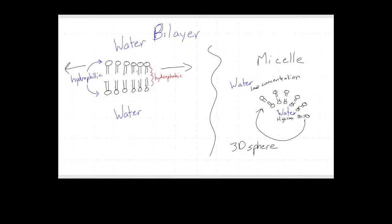If these phospholipids extend further and round up on themselves to form a complete circle, this happens in three dimensions, so it's actually a sphere. You can get what's called a micelle — a bubble of phospholipids where the water is on the outside and the hydrophobic tails are all tucked inside. Now, because we've made a sphere, the water on the outside and the water on the inside can have different amounts of solutes dissolved in them.